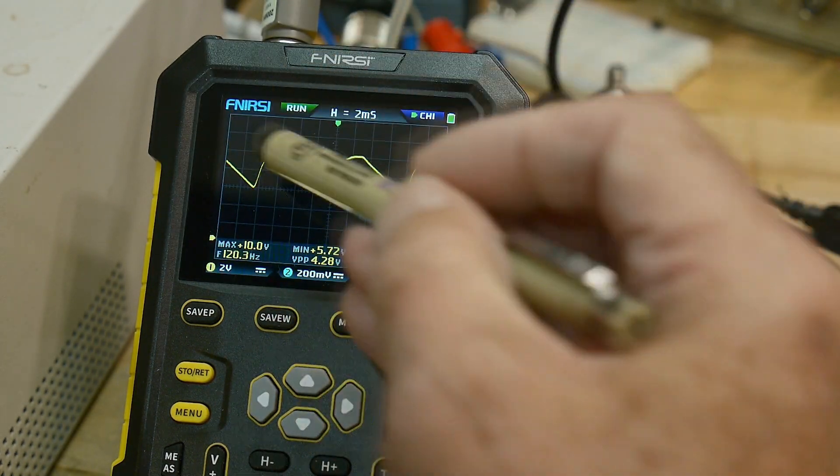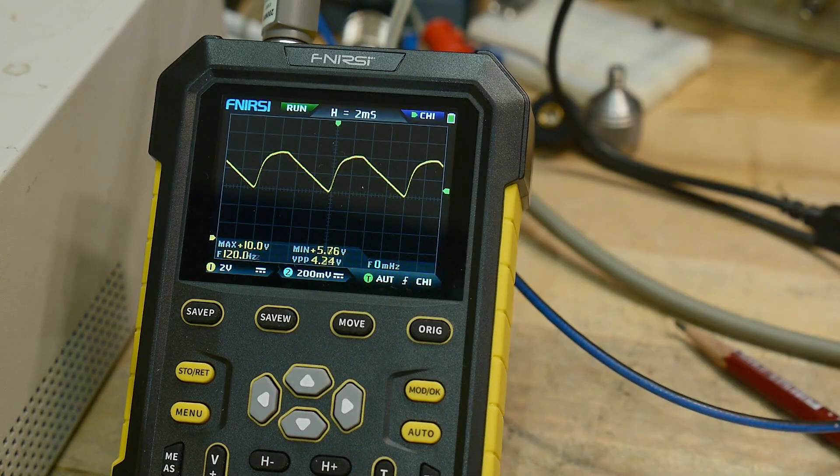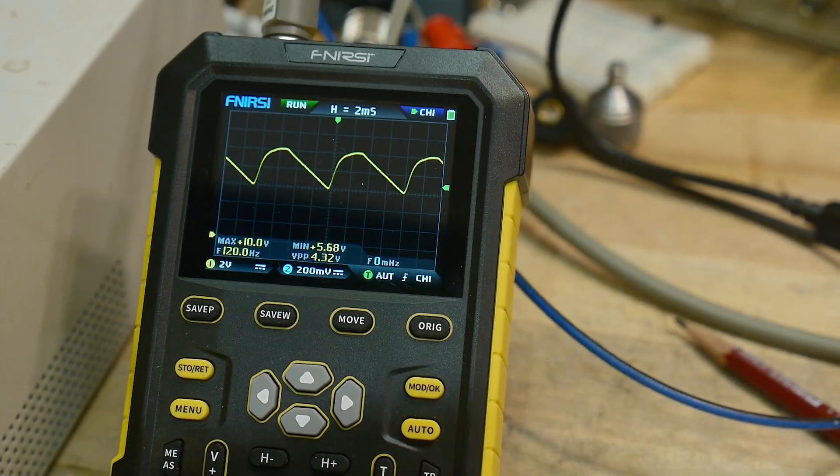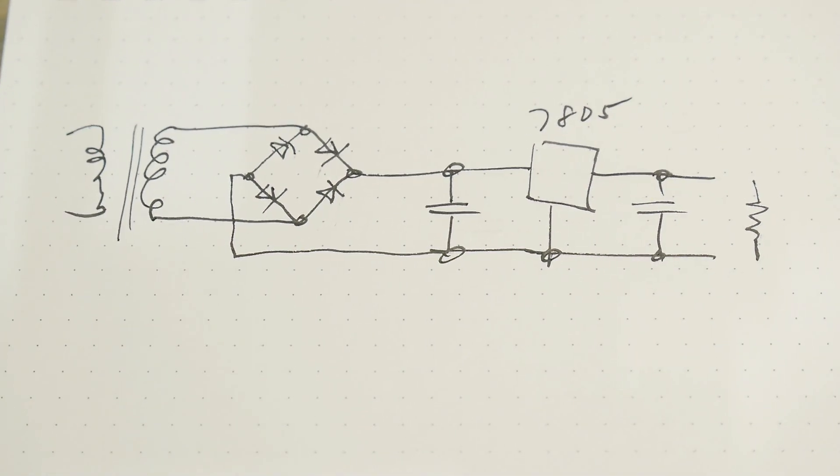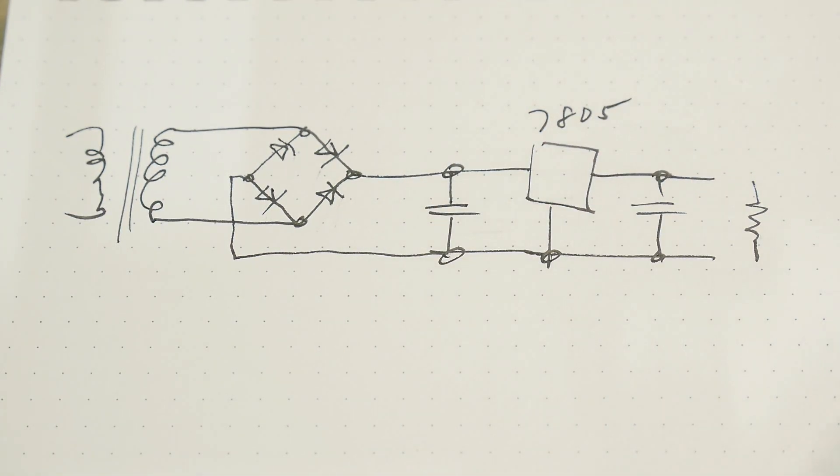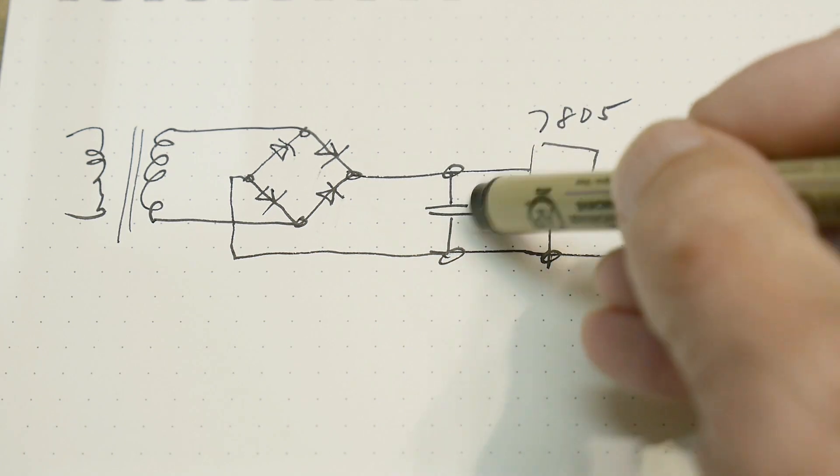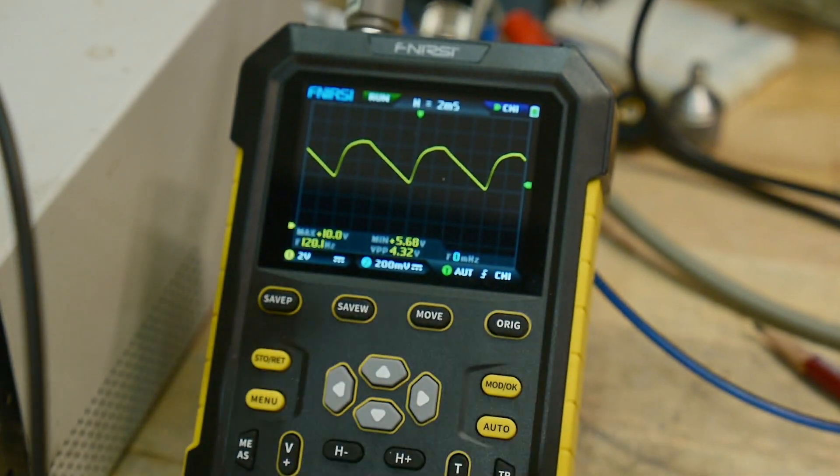It's still going up to 10 volts, but it's got too much droop. So if you have too much droop, that's this straight line here, too much droop, you need a bigger capacitor. It means that this capacitor can't hold up that voltage between the 120 hertz ripples. It needs to have more capacitance here. So let me add more capacitance.